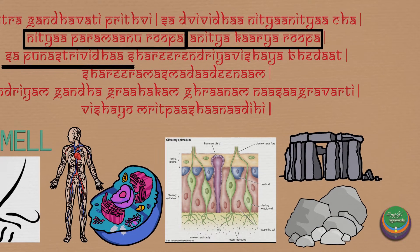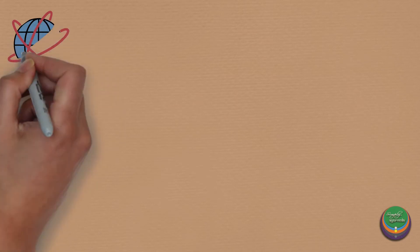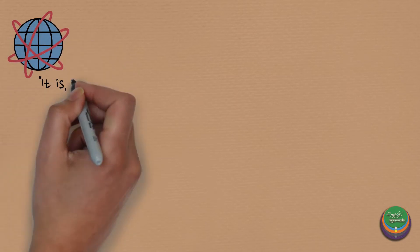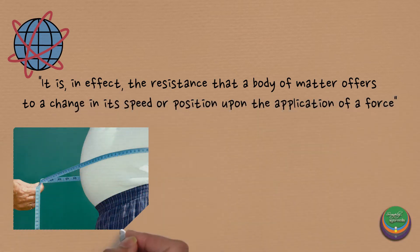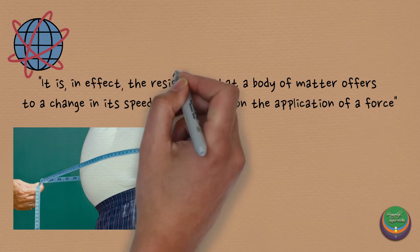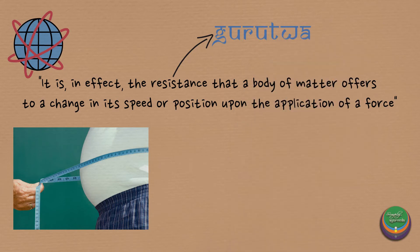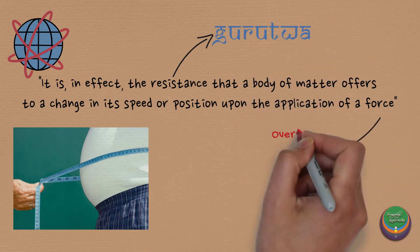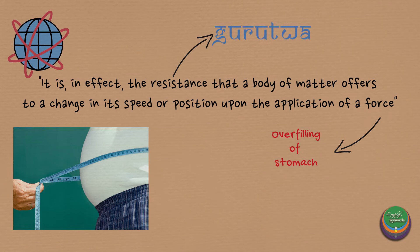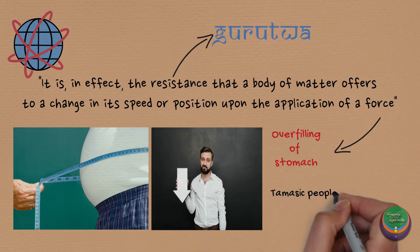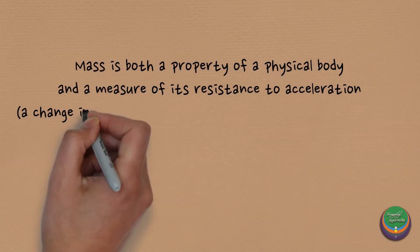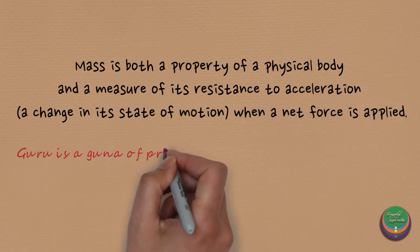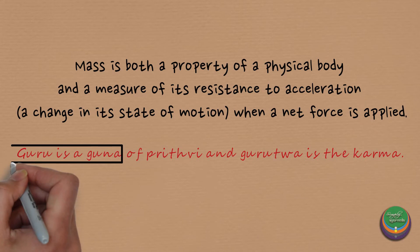We completed the literary portion of Prithvi Mahabhuta, but to understand it better let us consider some statements regarding mass. This is correlated with how heaviness is felt when the stomach stretches due to overeating. Uruttva here is the physical resistance offered to the force stretching caused by excess food. This explains why tamasic people lie in ignorance due to their refusal to change, and why Guru is the Guna of Prithvi and Gurutva is the Karma.